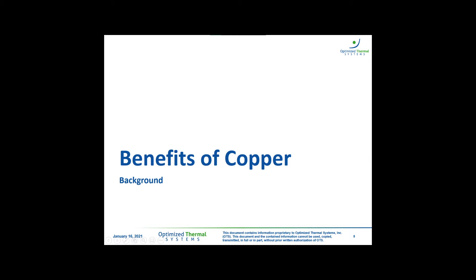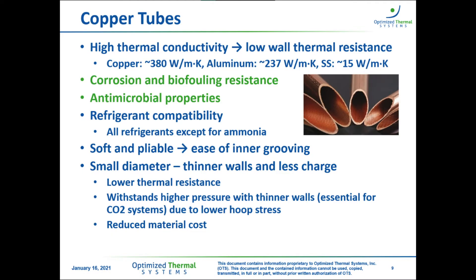Why do we use copper tubes in heat exchangers? The heat exchanger's primary job is to transfer heat, so we want a material with relatively high thermal conductivity. Copper has high thermal conductivity compared with other common materials such as aluminum or stainless steel. Low thermal conductivity gives us low wall thermal resistance and improved heat transfer between the working fluid inside the tube and the air on the outside. Copper also has natural antimicrobial properties that help it resist corrosion and biofouling.